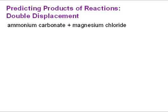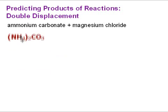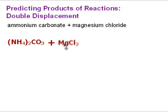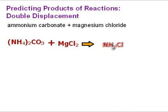By looking at both reactants, we see they're both compounds — they've got a positive ion and a negative ion. In that case it's got to be a double displacement reaction, so the positive and negative ions are going to switch places. That gives us (NH4)2CO3 + MgCl2 → NH4Cl and MgCO3.